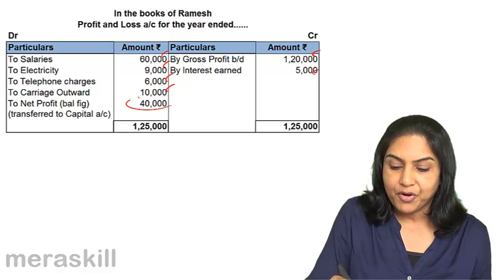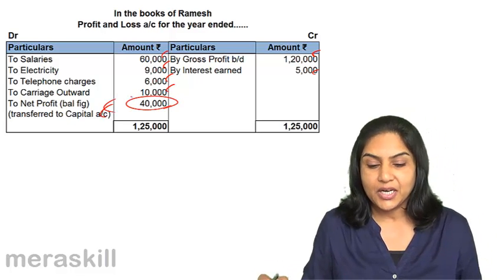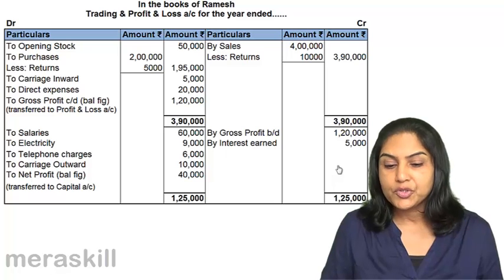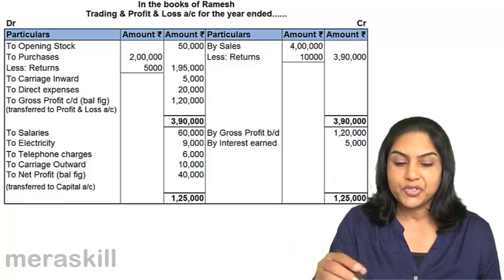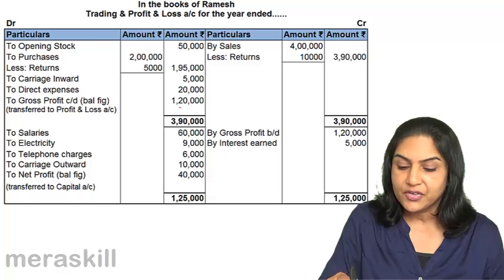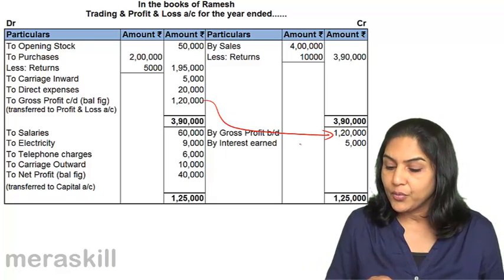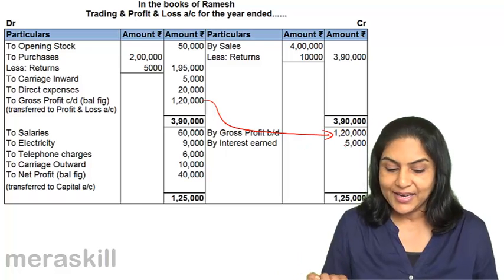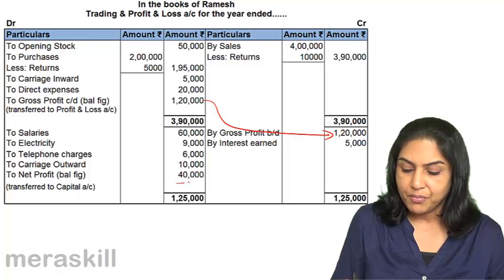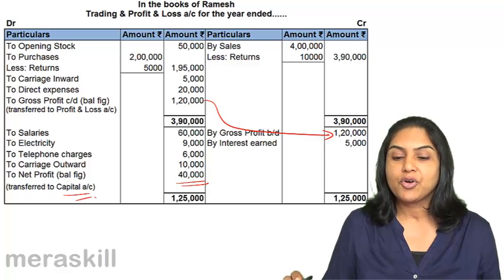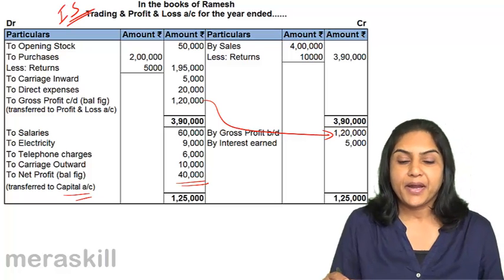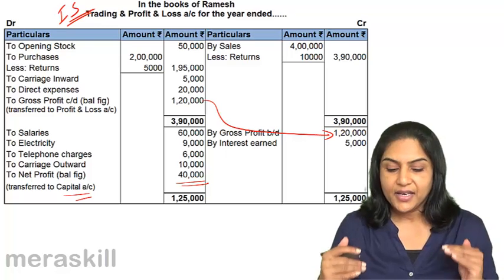The balancing figure here is net profit of 40,000, transferred to capital account. In total, this is how it would look — books trading and profit and loss account, a much neater presentation. Opening stock, purchases less return, carriage inward, direct expenses on the debit side; sales less returns on the credit side gives gross profit of 1,20,000. Interest earned is another income. All operating expenses total to give a net profit of 40,000 taken to capital account. This is the income statement prepared to ascertain the gross profit and the net profit.